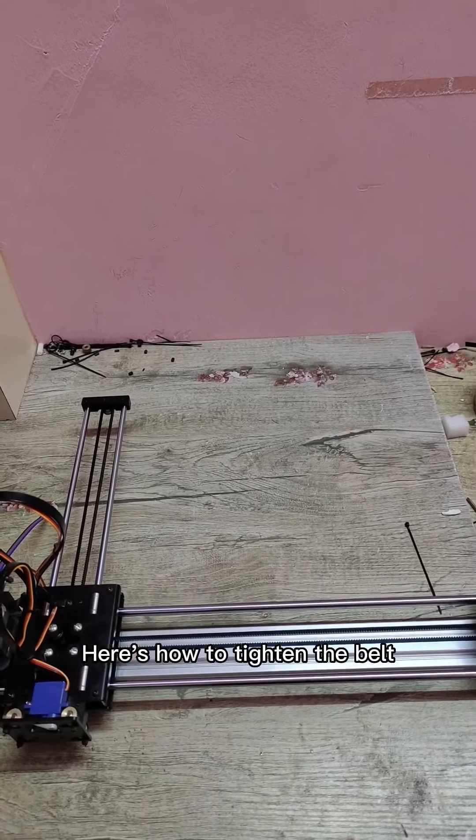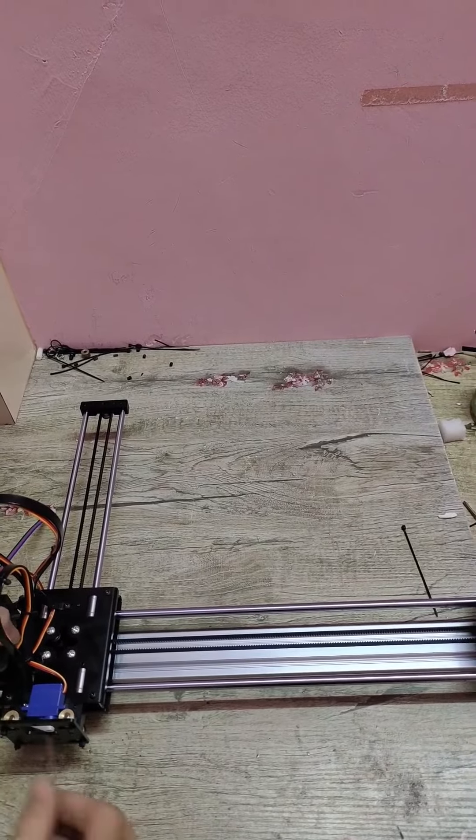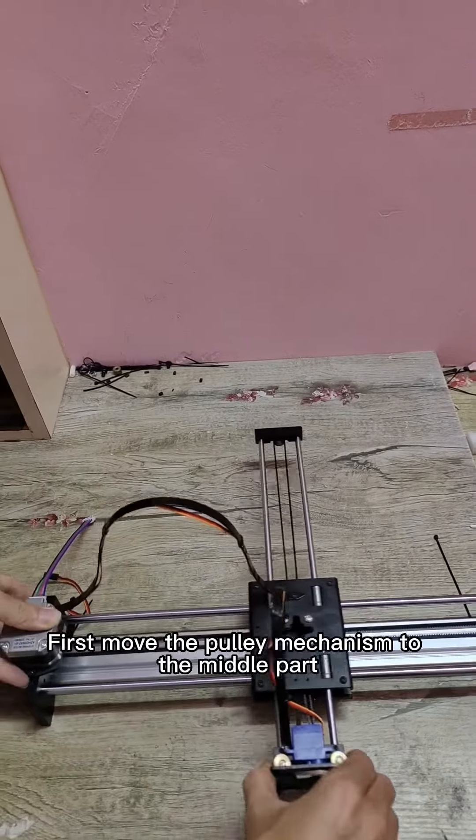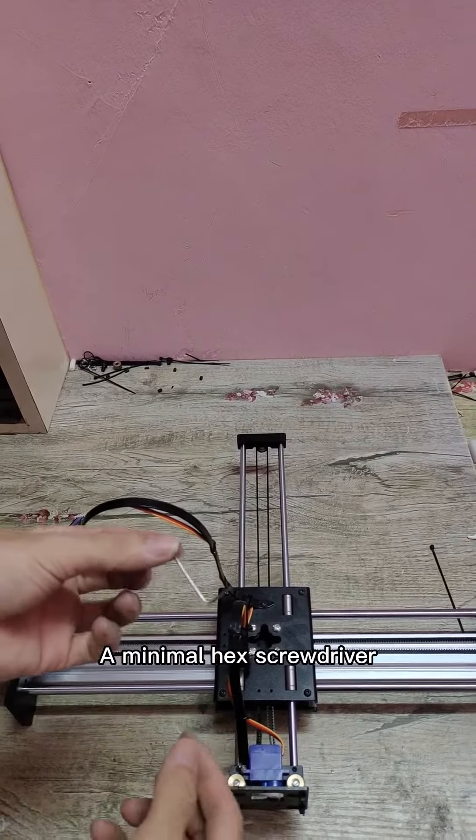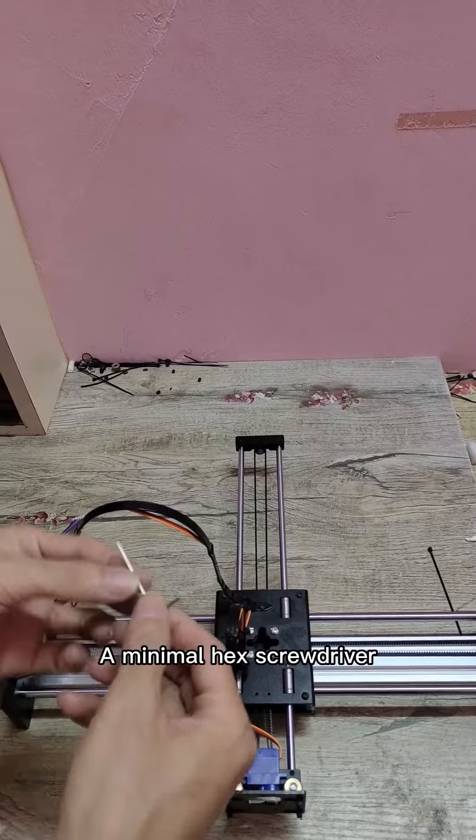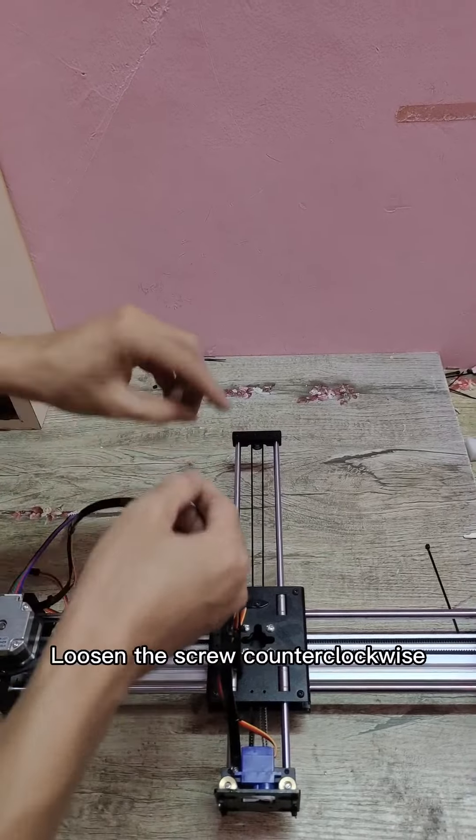Here's how to tighten the belt. First move the pulley mechanism to the middle part. Use a minimal hex screwdriver. Loosen the screw counterclockwise.